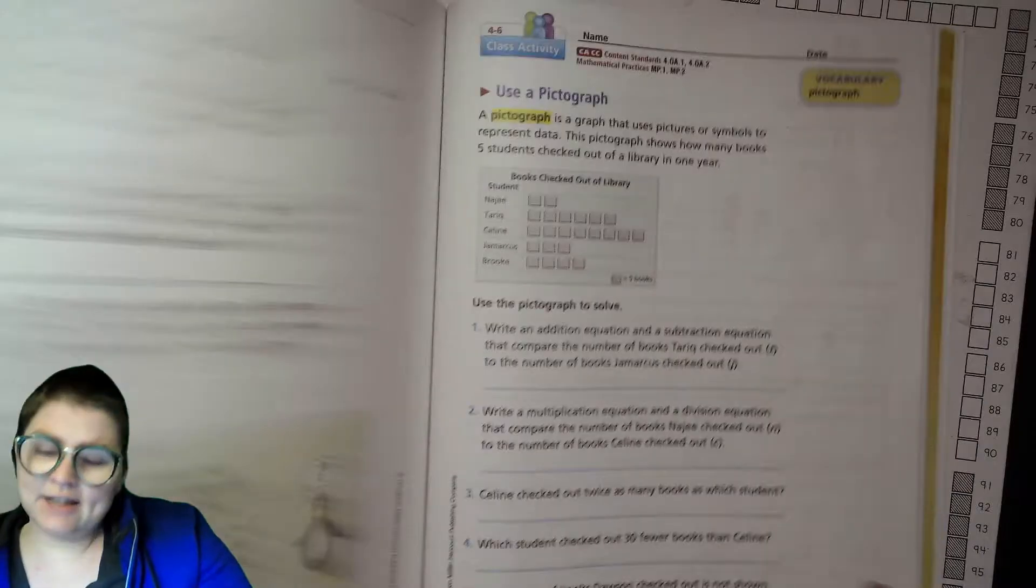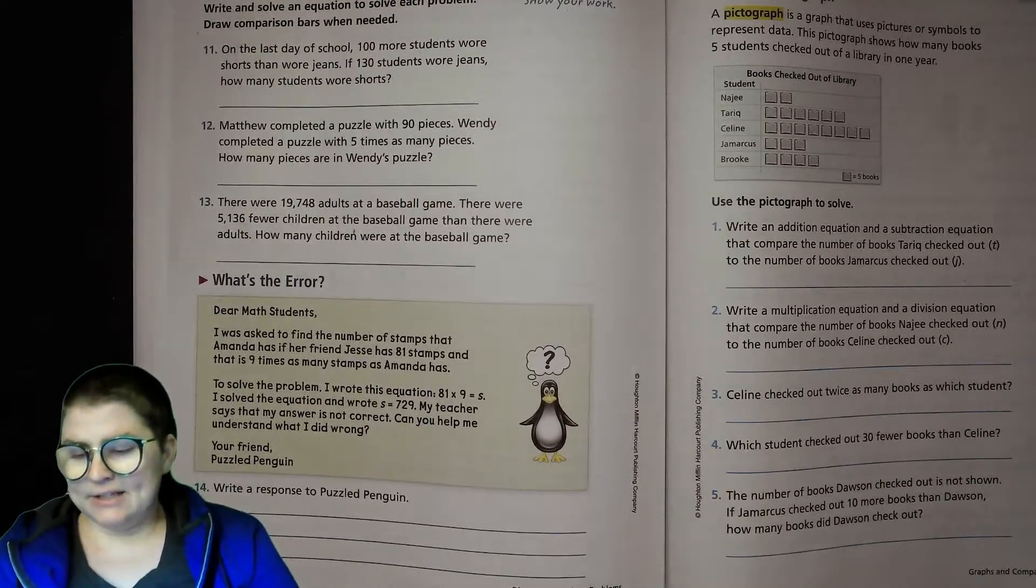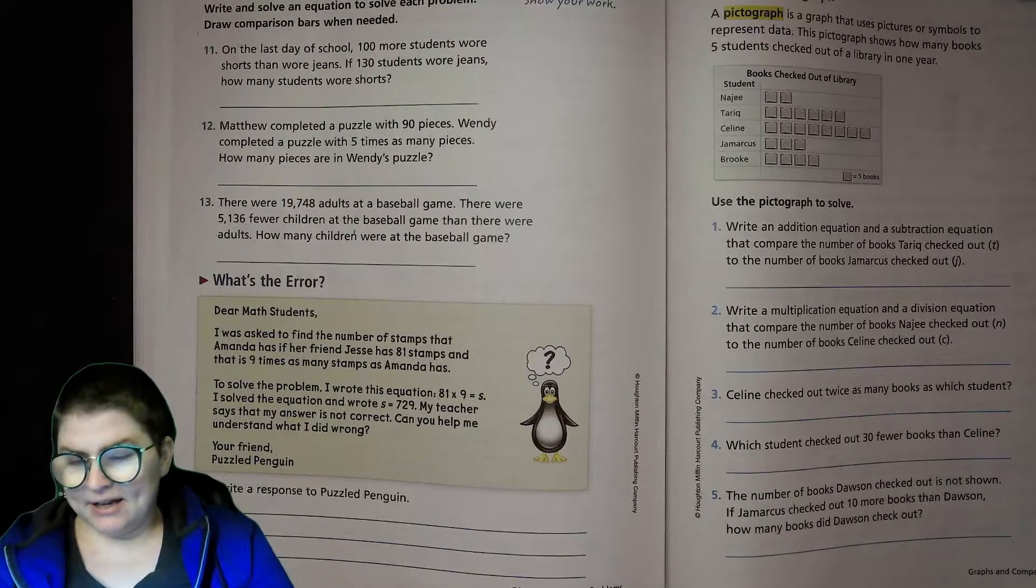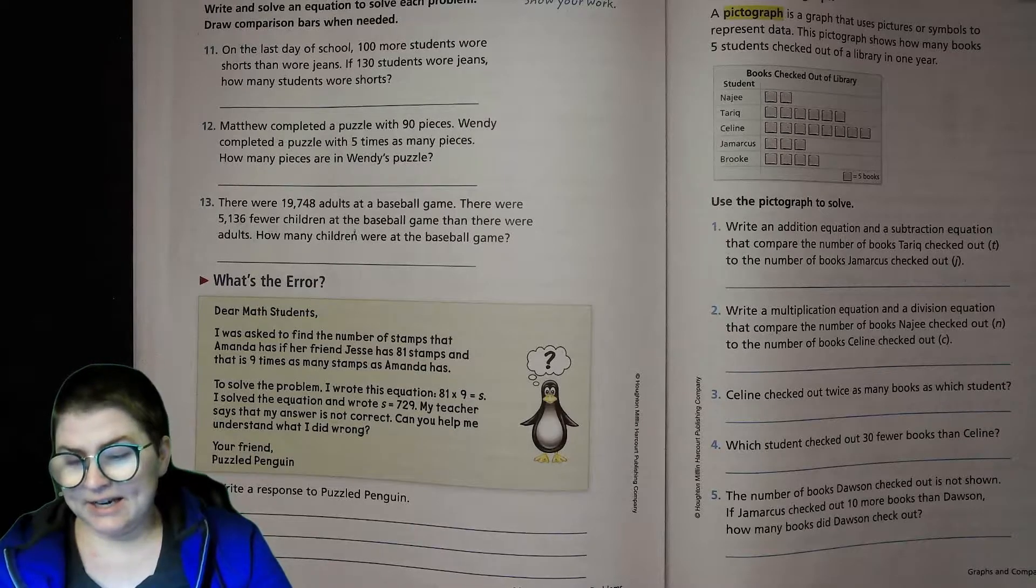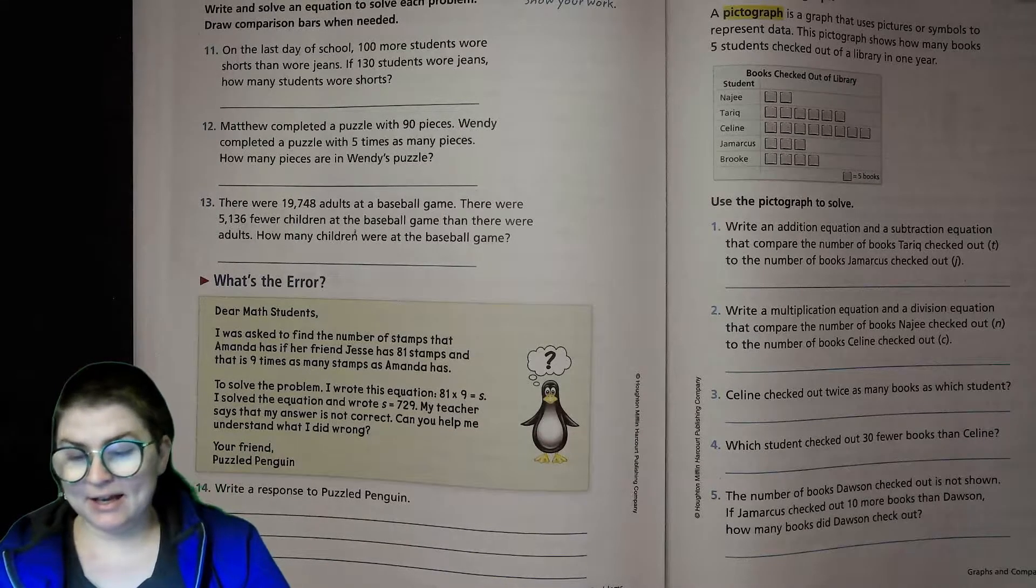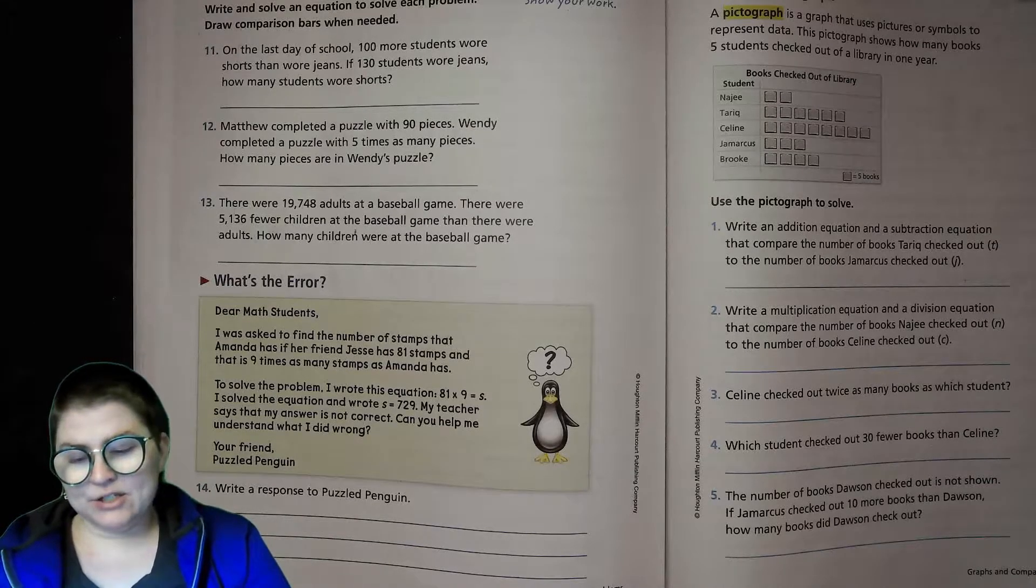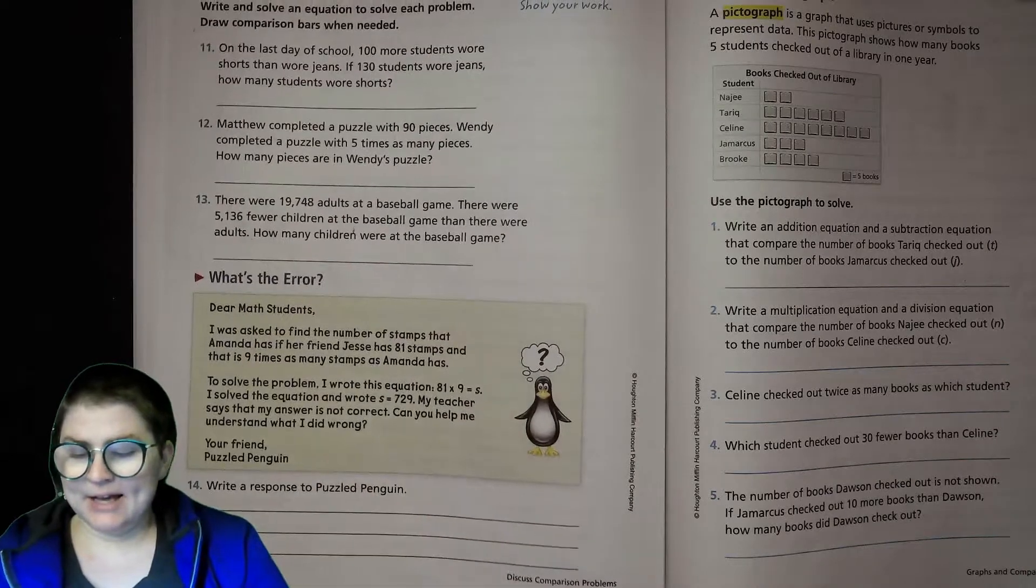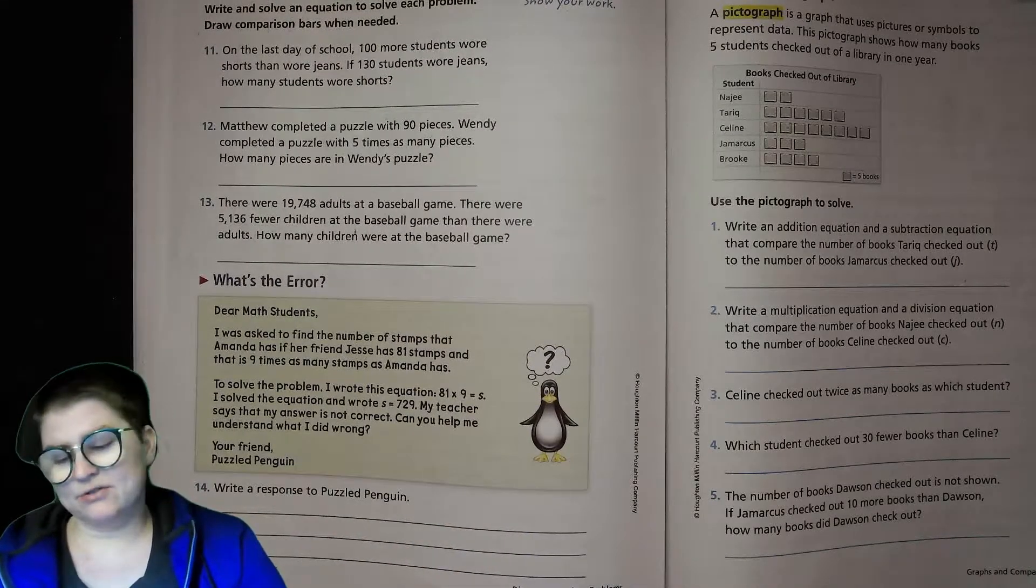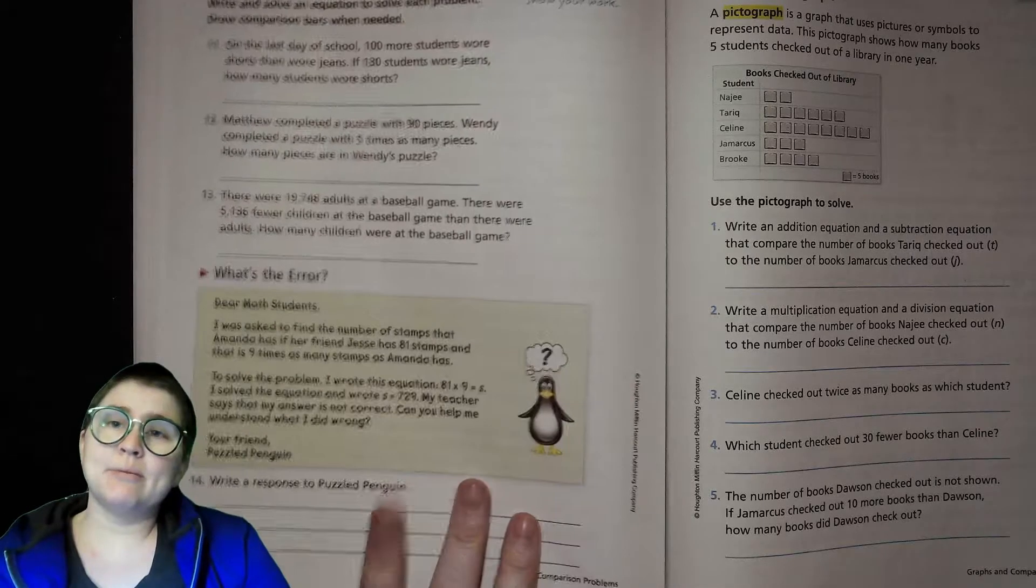The last one I'm going to do with you is the Puzzle Penguin. It says: Dear Math Students, I was asked to find the number of stamps that Amanda has if her friend Jesse has 81 stamps and that is 9 times as many stamps as Amanda has. To solve the problem I wrote my equation: 81 times 9 equals s. Then I solved and got 729. The answer is not right - can you help me? Think about what the problem is.